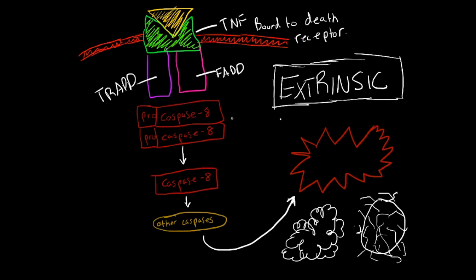So here we have the bound death receptor up here in the plasma membrane, and then you have these two adapter proteins. One is called FAD, and one is called TRAD. Then you also recruit these two pro-caspase-8.